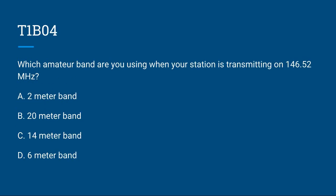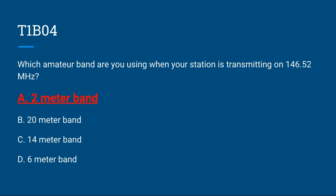T1B04: Which amateur band are you using when your station is transmitting on 146.52 MHz? A, 2 meter band; B, 20 meter band; C, 14.00 MHz; or D, 6.00 MHz. The correct answer is A, 2 meter band.